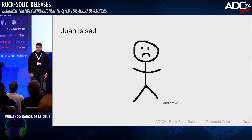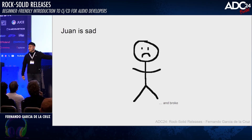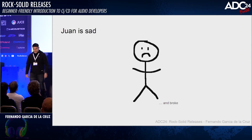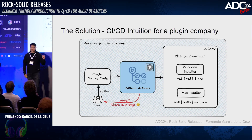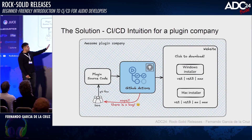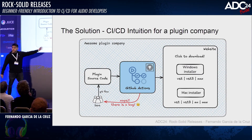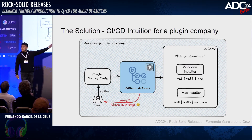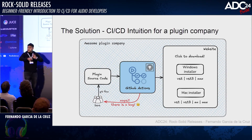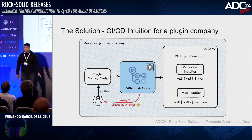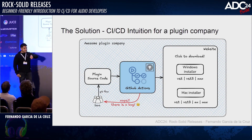And therefore Juan is sad because the investor decided to pass on his project. The intuition behind a GitHub Actions pipeline is: we have our source code, it goes into the GitHub Actions black box, and if everything goes okay — your plugin is working — then the pipeline will make your code deployable. It automatically builds, makes installers, and uploads to your website so the client can download it.